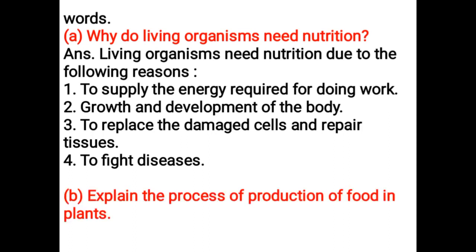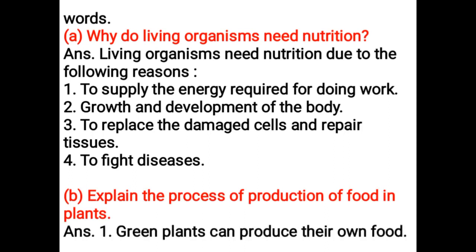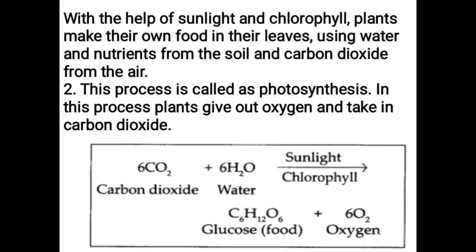Explain the process of production of food in plants. Green plants can produce their own food with the help of sunlight and chlorophyll. Plants make their own food in their leaves using water and nutrients from the soil and carbon dioxide from the air. This process is called photosynthesis. In this process, plants give out oxygen and take in carbon dioxide.